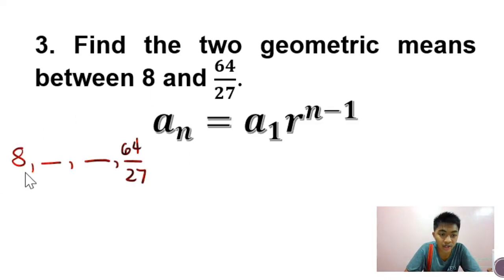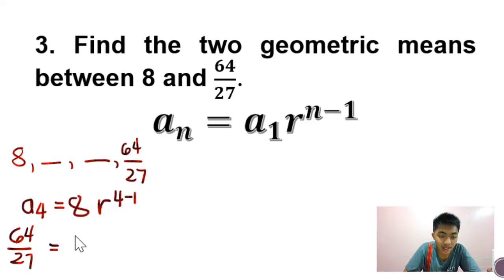So given si first term, given si fourth term, we're going to use this as our a sub n. So ang a sub n natin ay yung a sub 4. A sub 1 natin is yung 8. Common ratio yung hinahanap natin. And take note, yung n natin ay 4. So minus 1. And so a sub 4 here is the fourth term, which is 64 over 27. Which is equal to 8. And we simplify what's in here. That is actually 3.